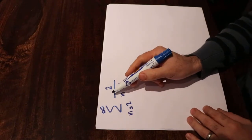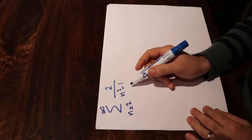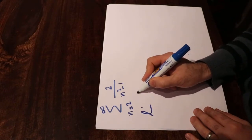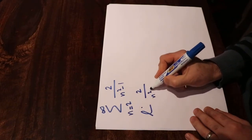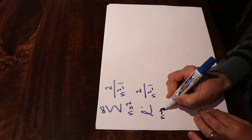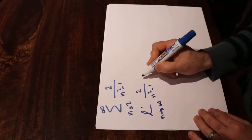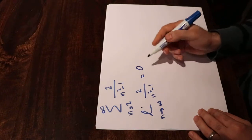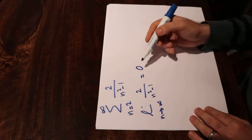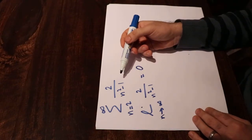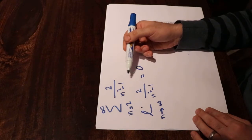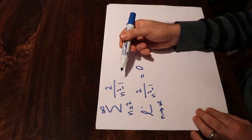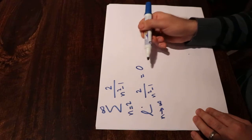Let's first calculate the limit of the term aₙ when n goes to infinity. The limit of 2 divided by n² minus 1, when n goes to infinity, is equal to 2 divided by infinity, which will be equal to 0.